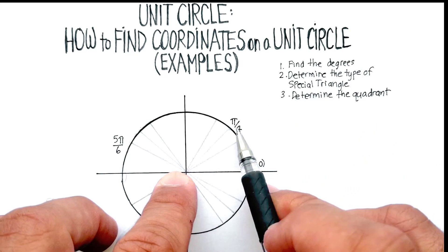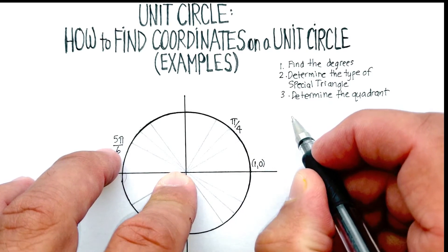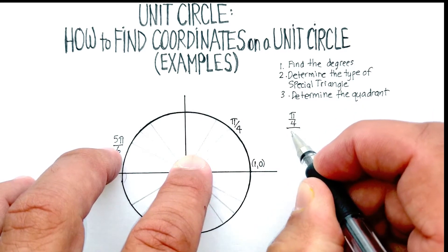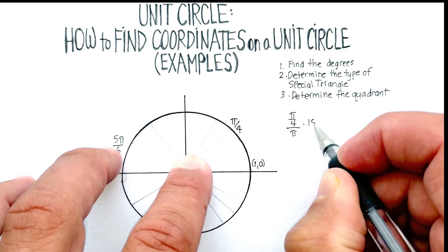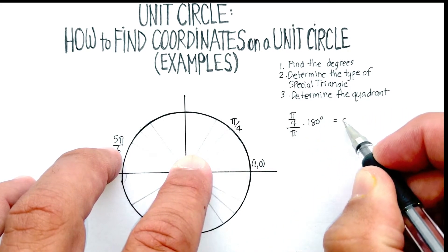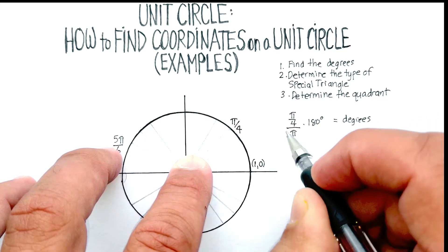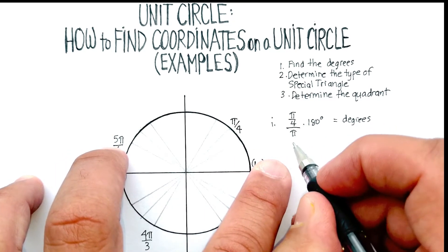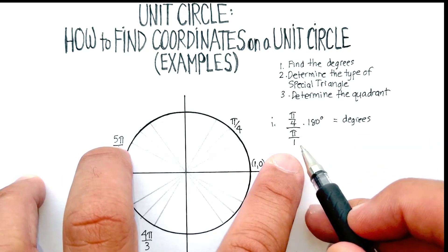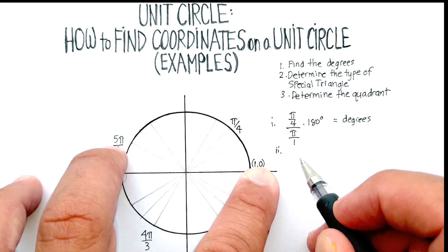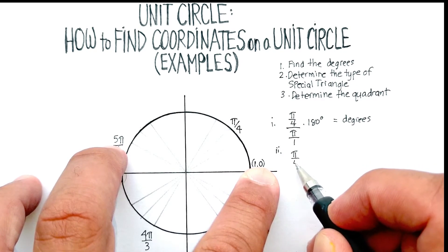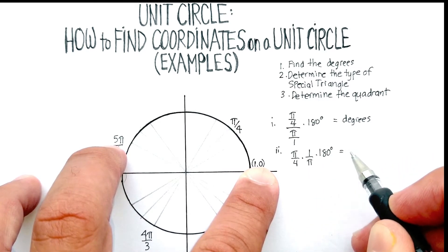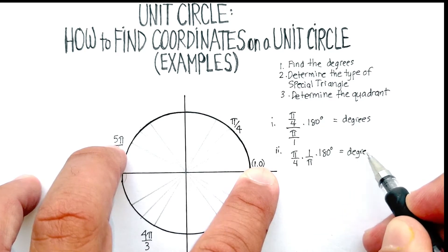We know that the formula for changing radians to degrees is the radian itself, so in this case, π over 4 divided by π times 180 will give you the number of degrees at that location. So we have a fraction divided by a fraction. Let me make π a fraction, so it's just π over 1. And when you have that, you multiply by the reciprocal. So π over 4 times 1 over π times 180 will give you the number of degrees.